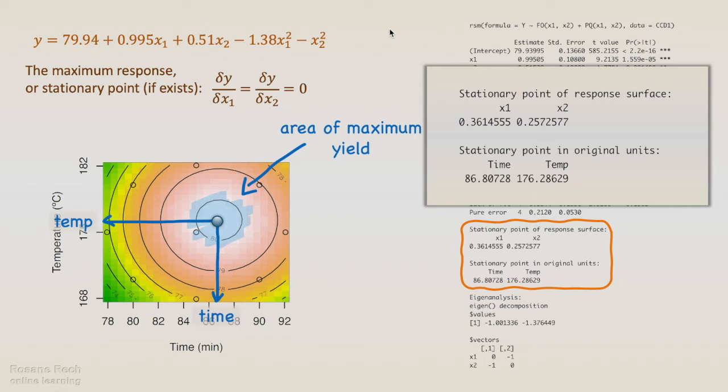In this example, the maximum yield occurs at 86.8 minutes and 176.3 degrees Celsius. So, this final experimental design has led us to the optimized conditions for the reaction yield.